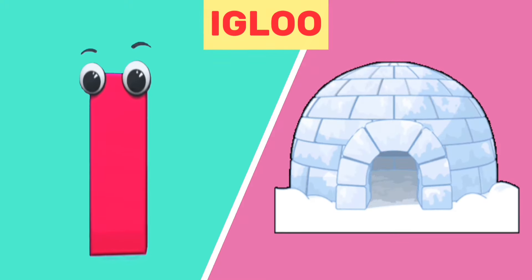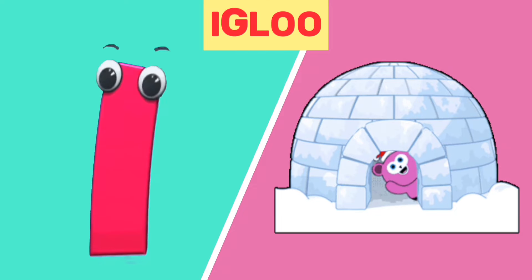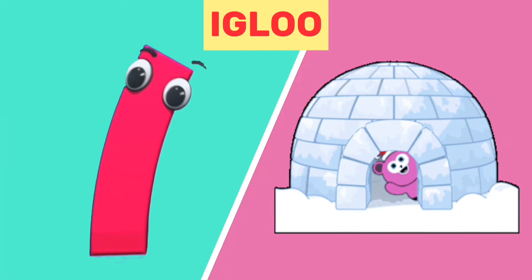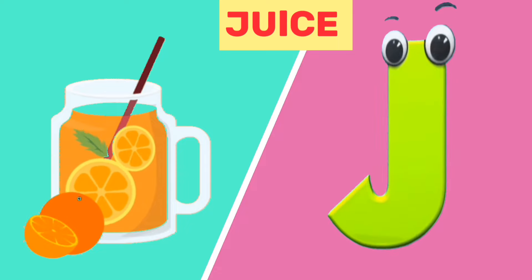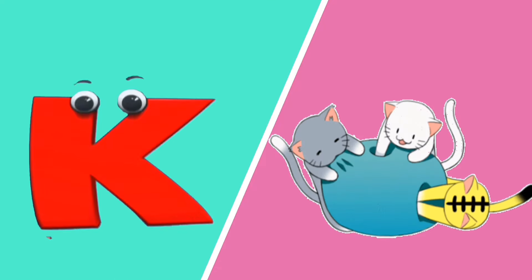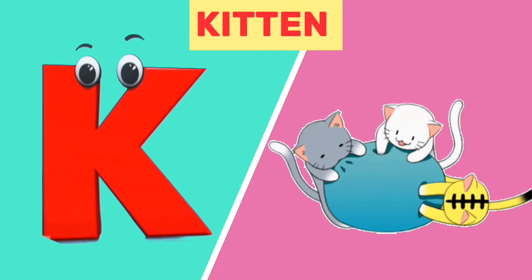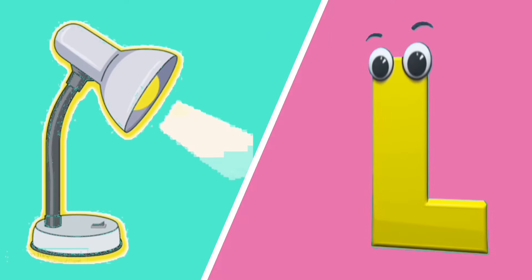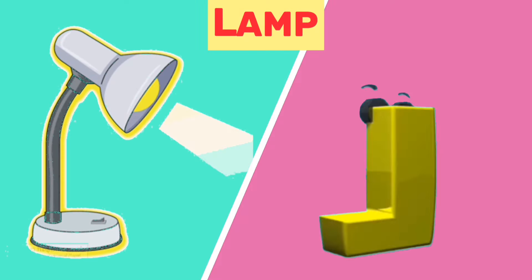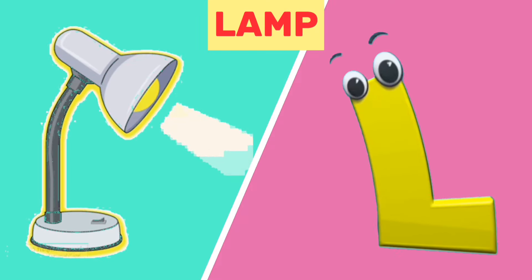I is for igloo, i, igloo. J is for juice, j, juice. K is for kitten, k, kitten. L is for lamp, l, lamp.